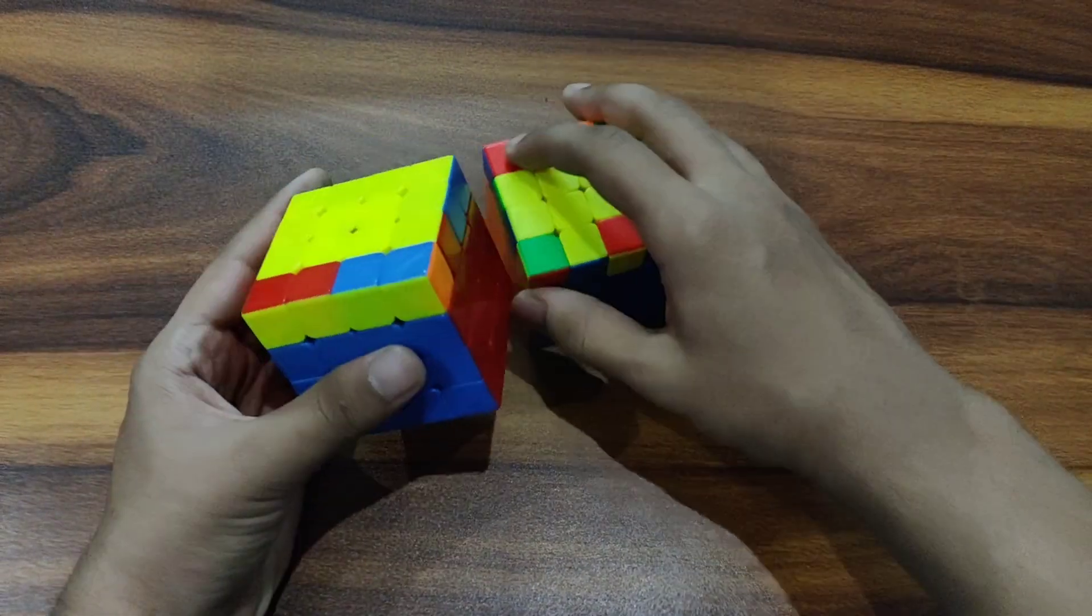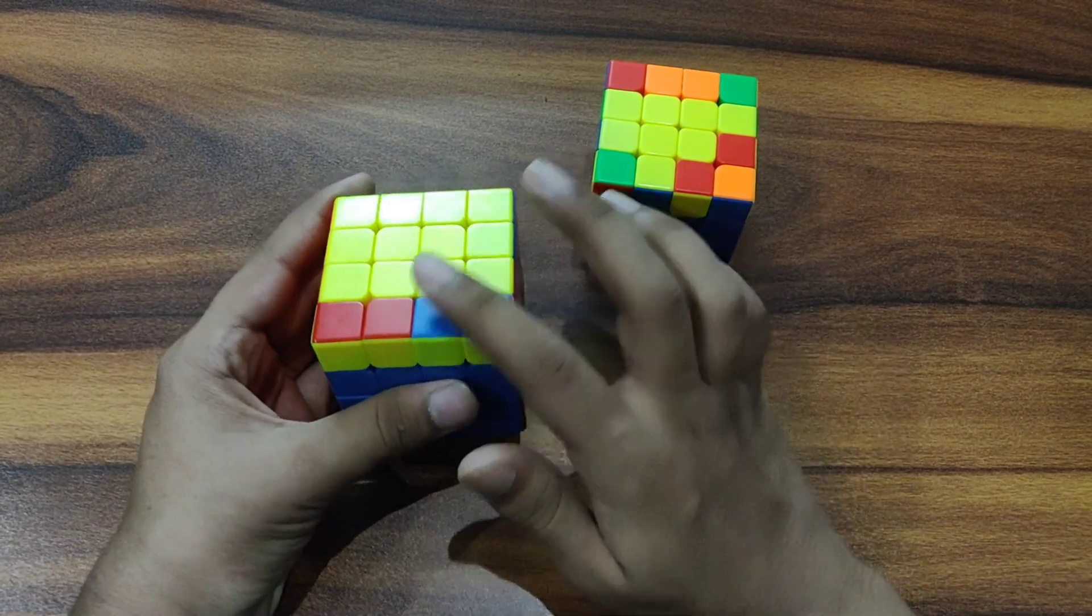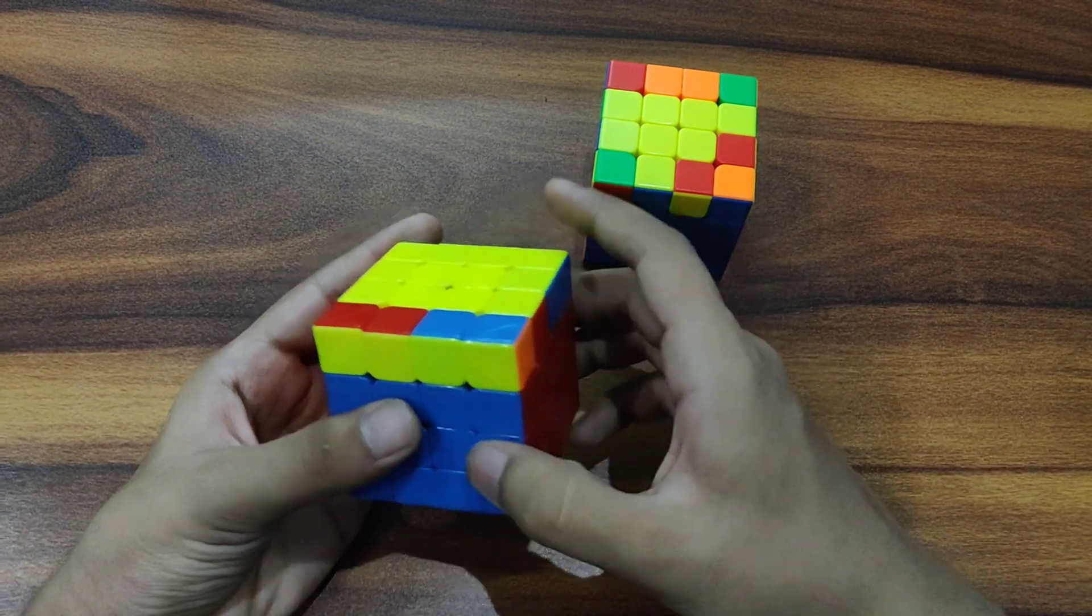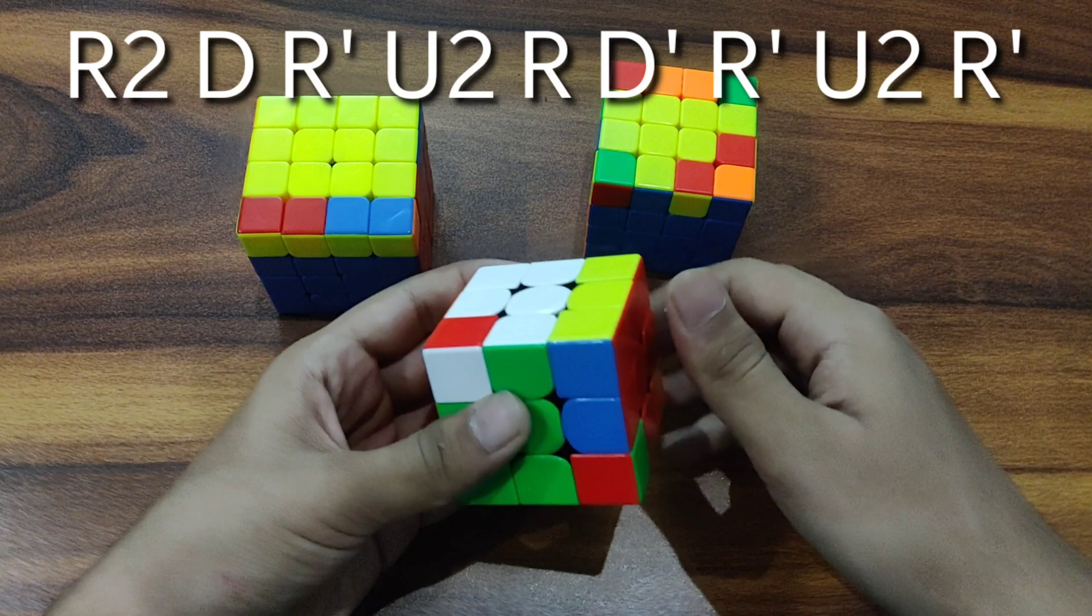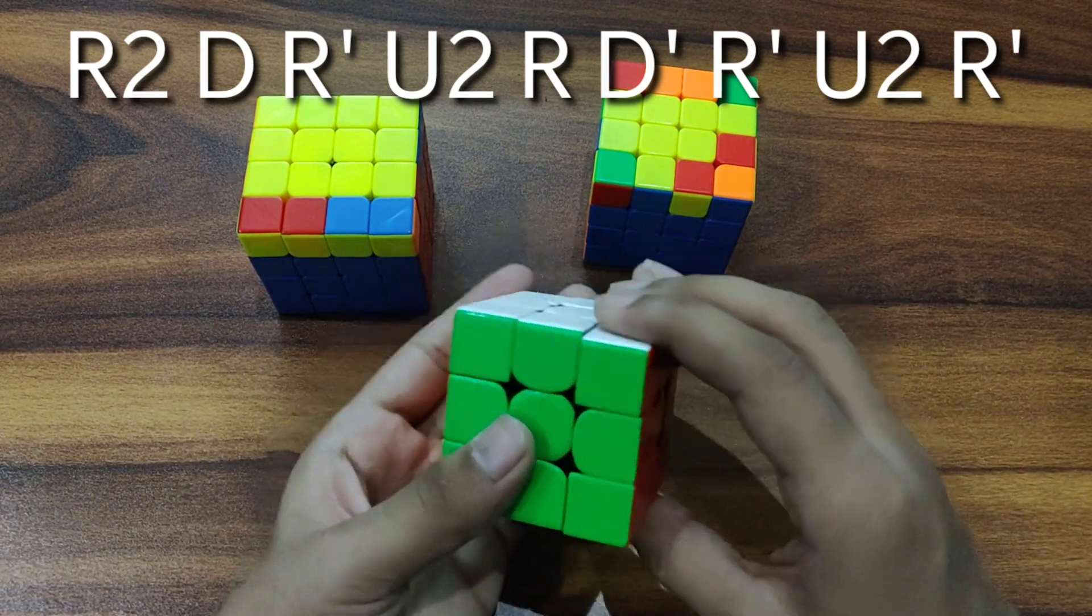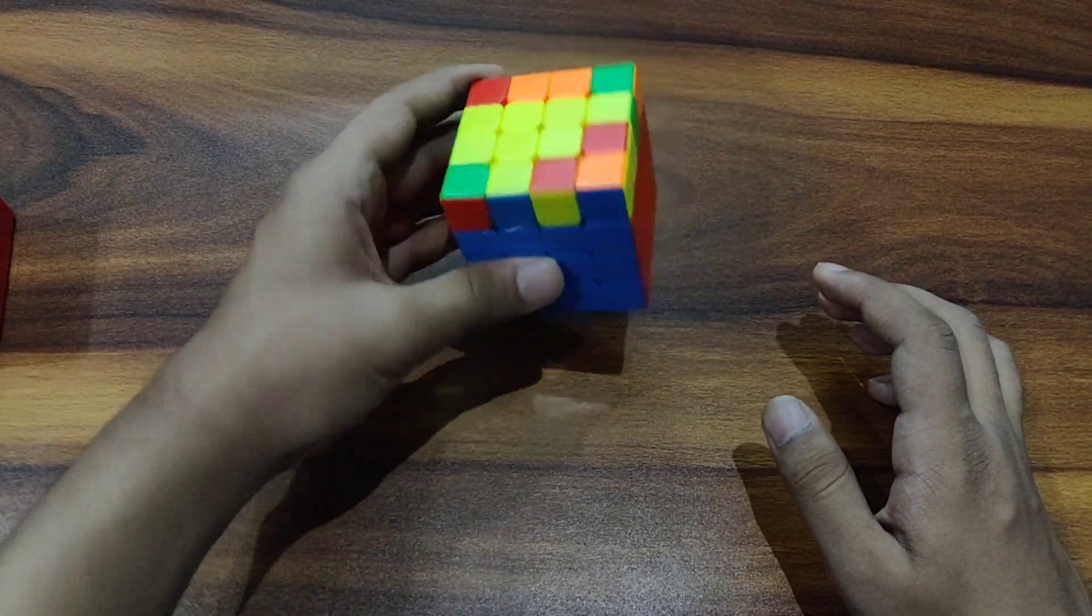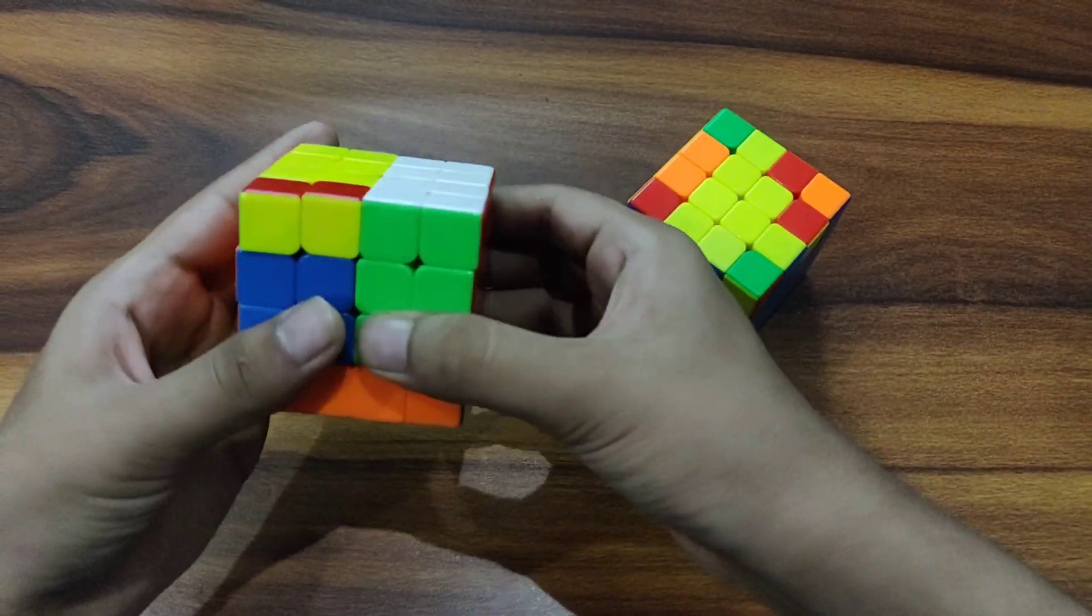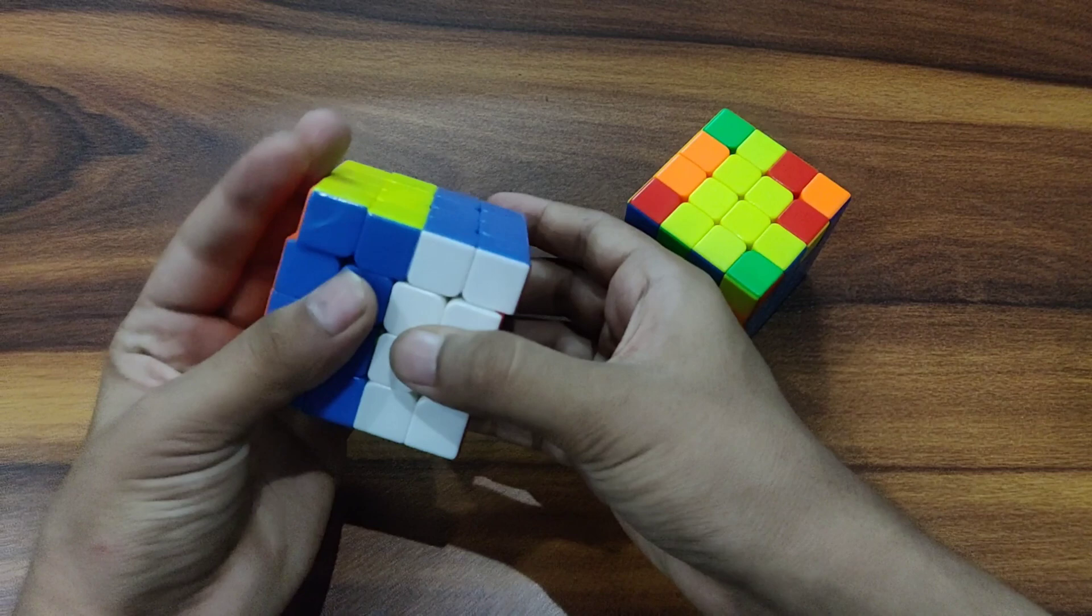So the last layer case is actually this one in which this piece needs to go here and this one here. So it's this pattern. So the algorithm for this case is same as this old case for three by three: R2 D R prime U2 R D prime R prime U2 R prime. But we have to do all the R moves with wide R. So wide R2, D, wide R prime, U2, wide R, D prime, wide R prime, U2, wide R prime.